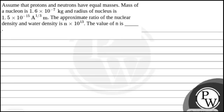Let's read this question. Assume that proton and neutron have equal mass. Mass of a nucleus is 1.6×10⁻⁷ kg and radius of nucleus is 1.5×10⁻¹⁵ × A^(1/3) meters. The approximate ratio of nuclear density to water density is n×10¹³. Find the value of n.